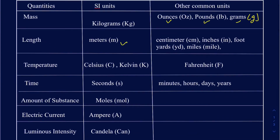The next fundamental quantity is temperature. The SI unit is Kelvin. However, Celsius is also used in calculations. Here in North America, we mainly use Fahrenheit. It's extremely important to be able to convert between Fahrenheit and Celsius, or Celsius and Kelvin, and vice versa.